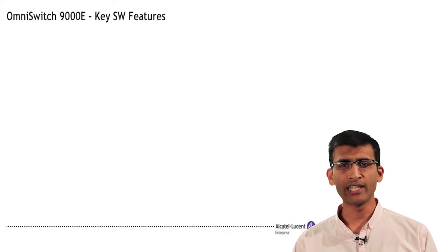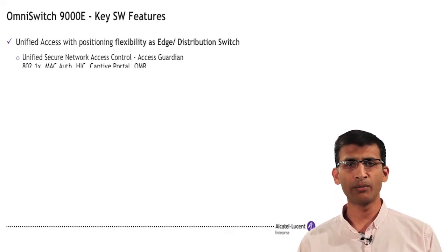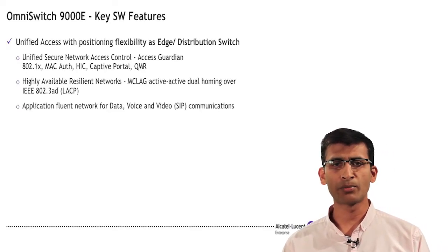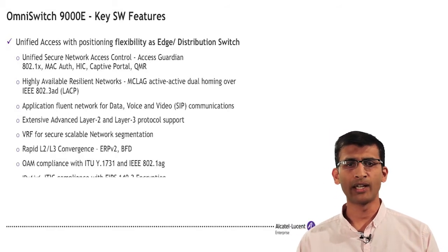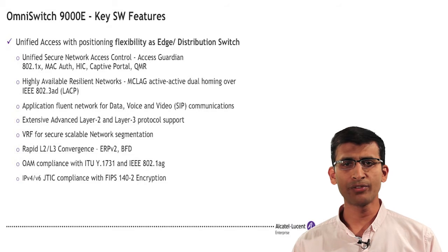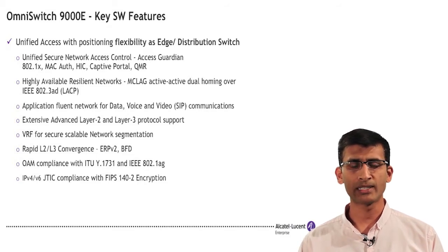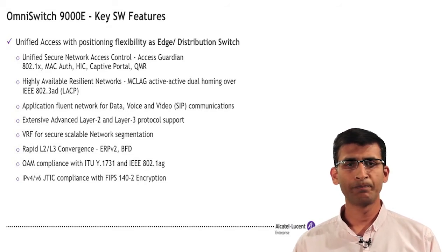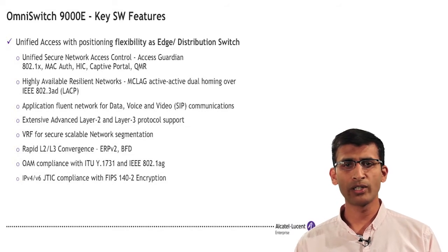Focusing on key software features, the OmniSwitch 9000E uses the familiar and field-proven Alcatel Lucent Enterprise Operating System, also referred to as AOS, providing seamless provisioning with extensive feature sets addressing most customer requirements. AOS supports an extensive set of layer 2 and layer 3 standard protocols including VRF for multi-tenant networks.